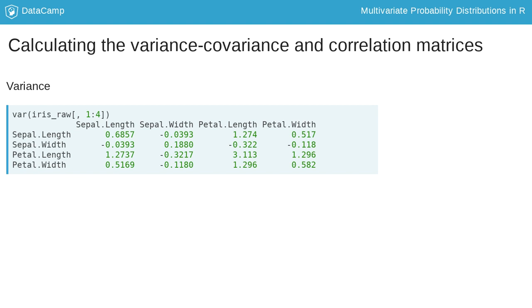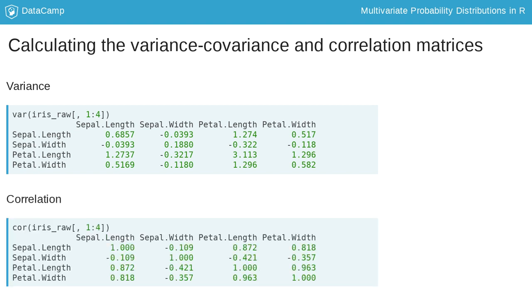For example, minus 0.0393 is the covariance between sepal width and sepal length. The correlation matrix is a generalization of the concept of correlation between two variables. The off-diagonal elements give the correlation between the ith and the jth variables, and the diagonal entries are always 1, since it is a variable's correlation with itself.